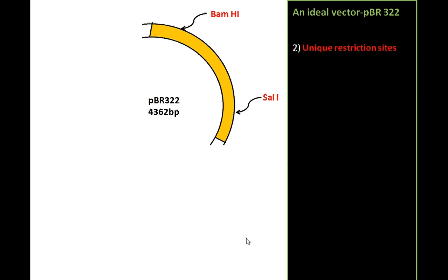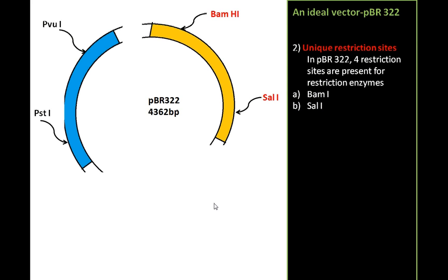Now, the second part, that is the unique restriction sites. In pBR322 vector, there are four unique restriction sites: BamHI, SalI, PvuI, and PstI. So, what is it for?